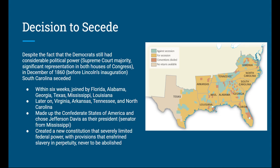This was not a unanimous decision, but enough support came together that 11 states seceded and formed the Confederate States of America. They chose Jefferson Davis, a senator from Mississippi, as their president, and created a new constitution that severely limited federal power and contained provisions enshrining slavery in perpetuity, never to be abolished. There has been debate over whether the South seceded over states' rights or slavery — and while states' rights played a role, the right they were most concerned about was holding slaves, clearly reflected in the constitution that enshrined it forever.